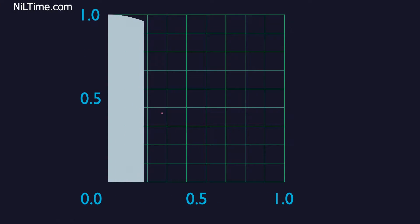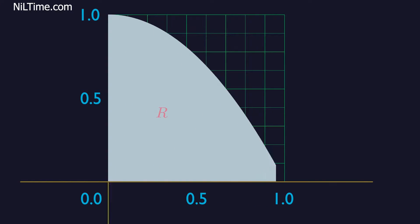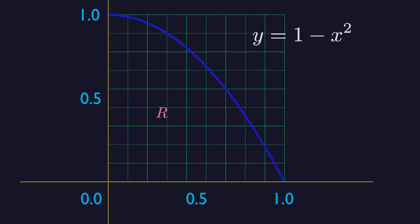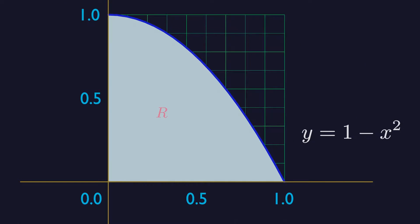Suppose we want to find the area of the shaded region R that lies above the x-axis and below the graph of this equation. Unfortunately, there is no simple geometric formula for calculating the area of general shapes having curved boundaries like the region R. How, then, can we find the area?